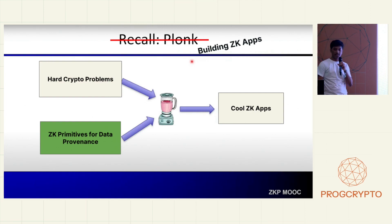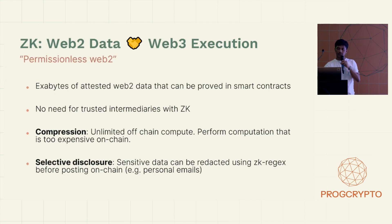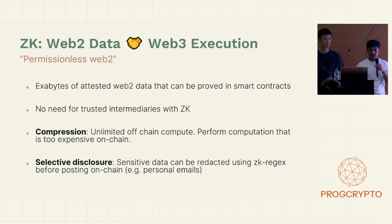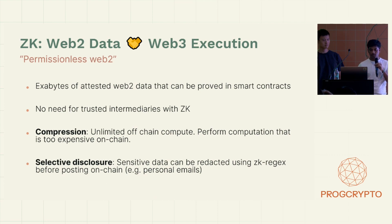Now that we've discussed one of the components that goes into building a cool ZK app, let's discuss the next one, which is ZK primitives for data provenance. There are exabytes of data in Web2 that can be brought on chain and proved in smart contracts to do a bunch of cool stuff, and ZK allows us to do exactly that without trusting any centralized intermediaries — you only have to trust the math done by Dan Boneh and others. The two properties of ZK that allow us to perform Web3 execution on Web2 data are compression, which unlocks unlimited off-chain compute, enabling complex computations like RSA signature verification that were too expensive to do on-chain previously, and selective disclosure, which lets you redact all sensitive data before posting it on-chain, enabling privacy.